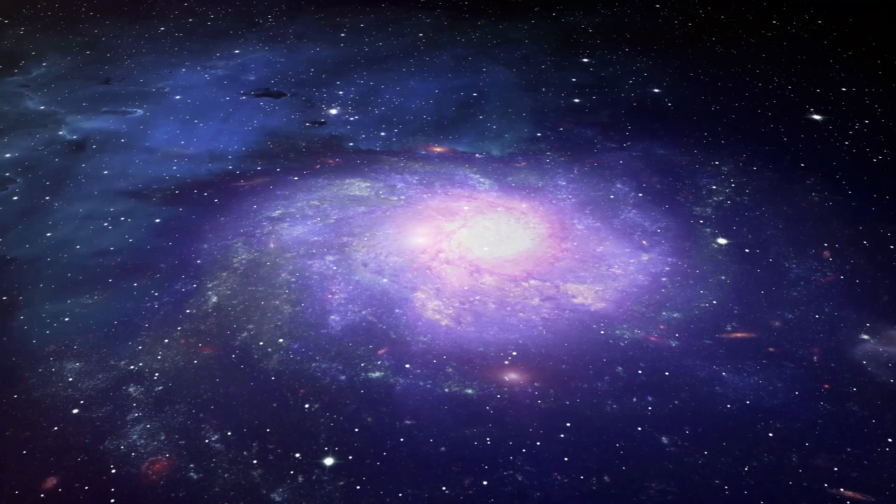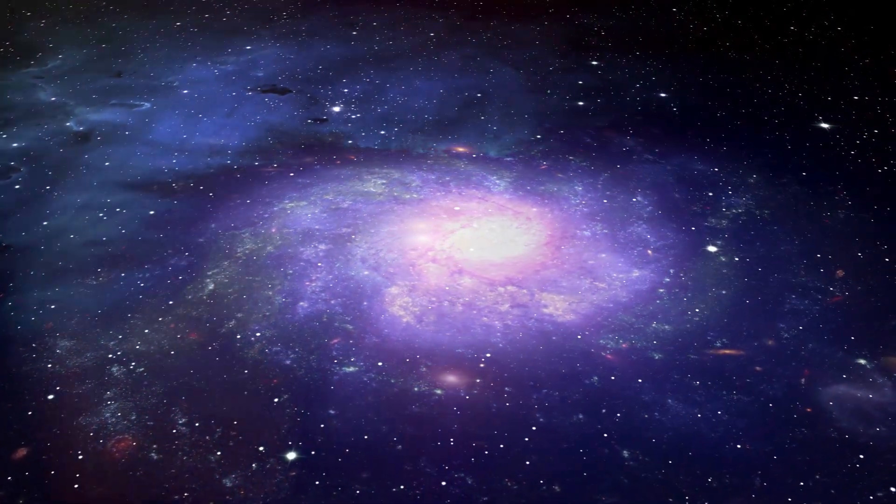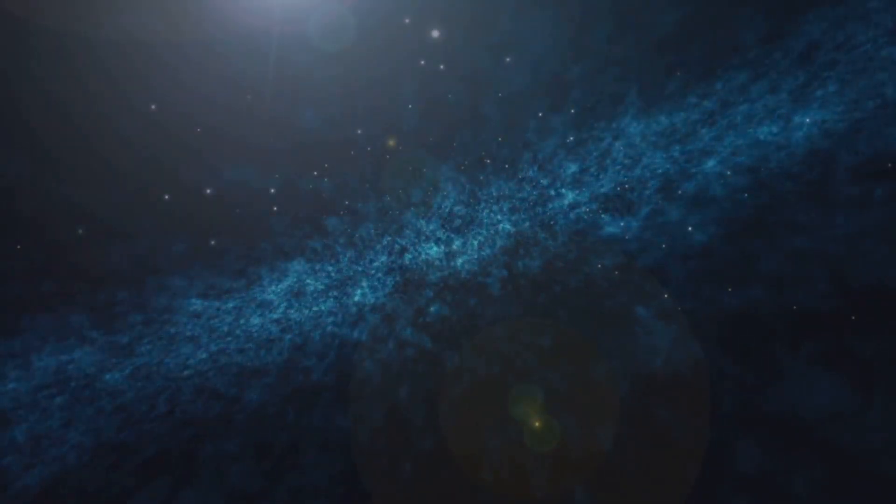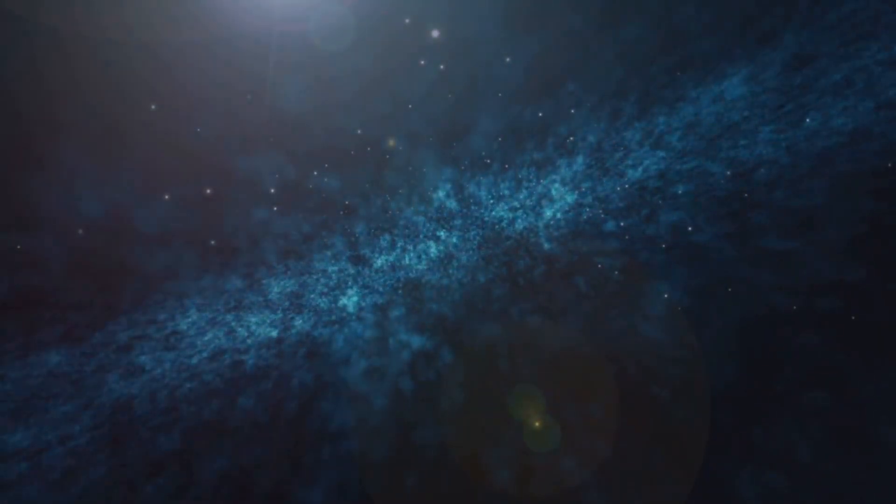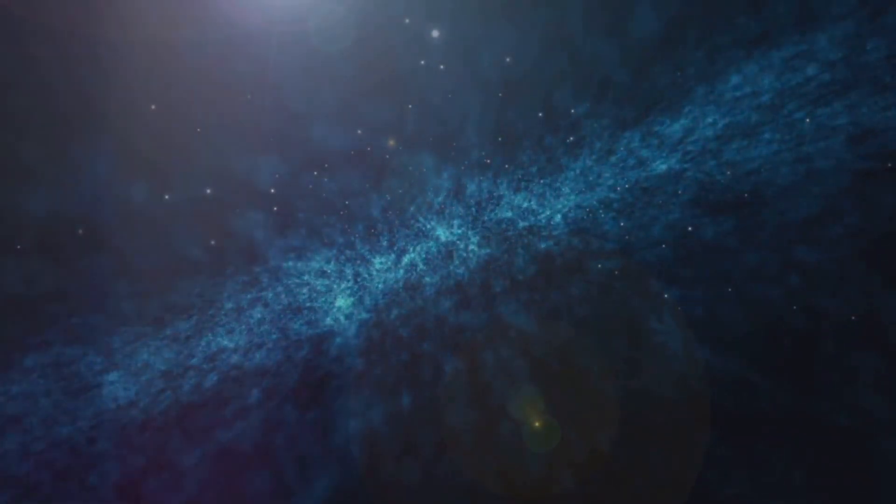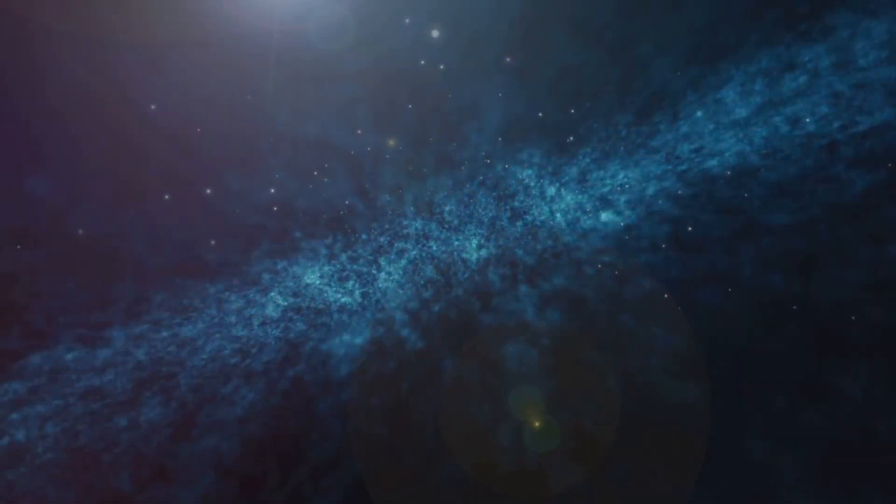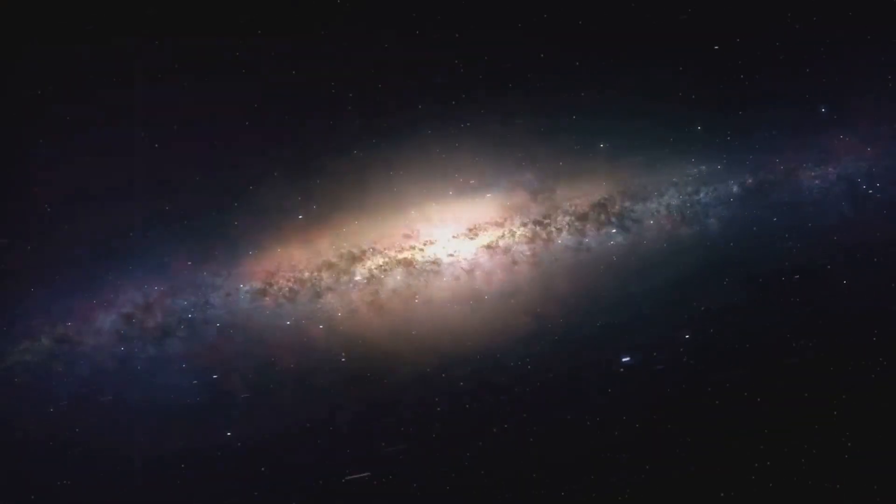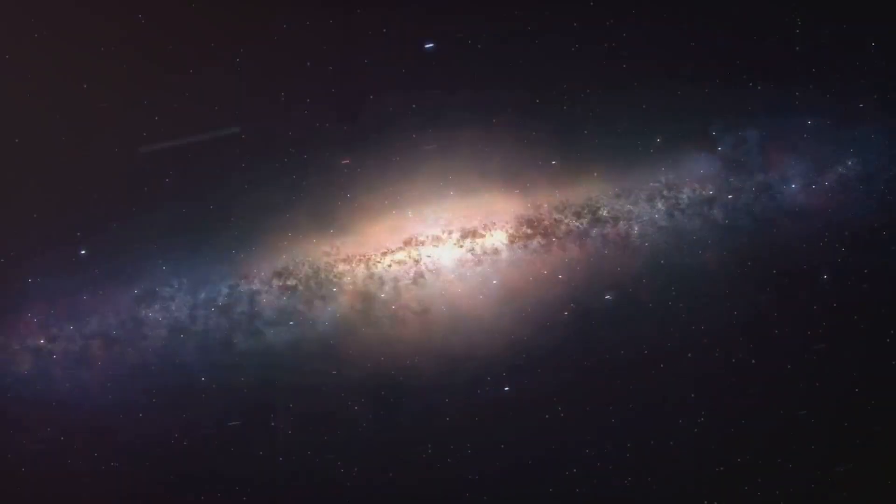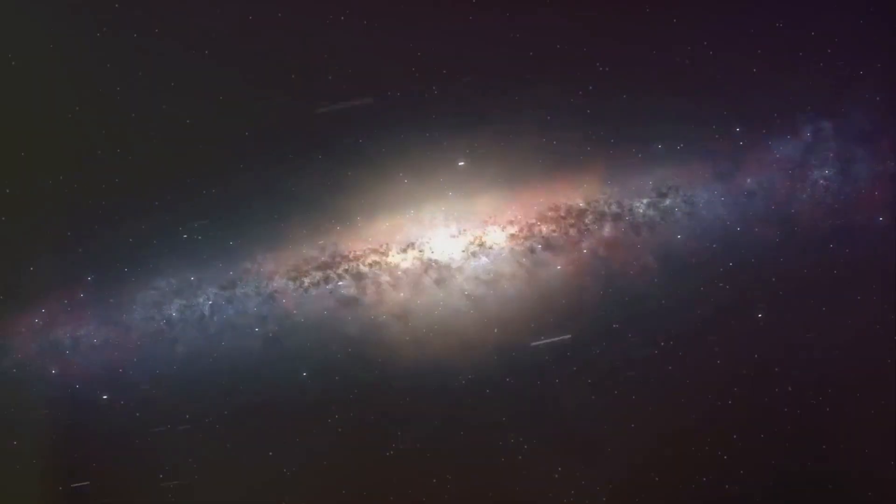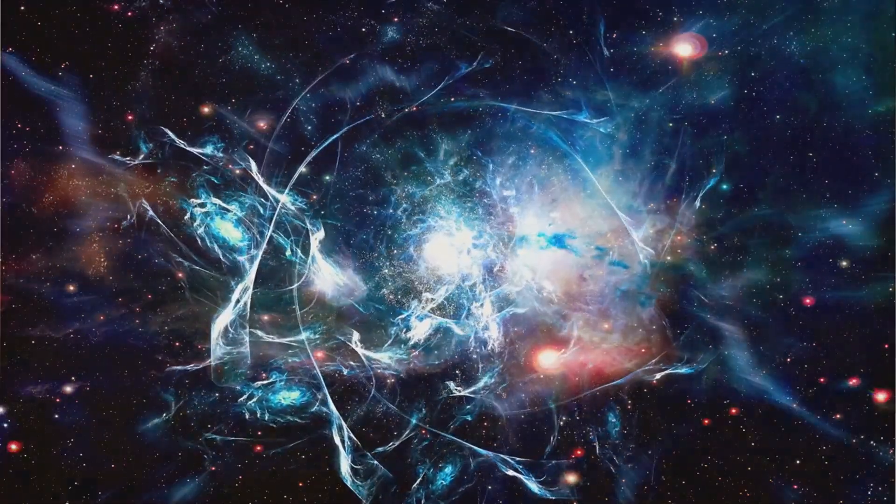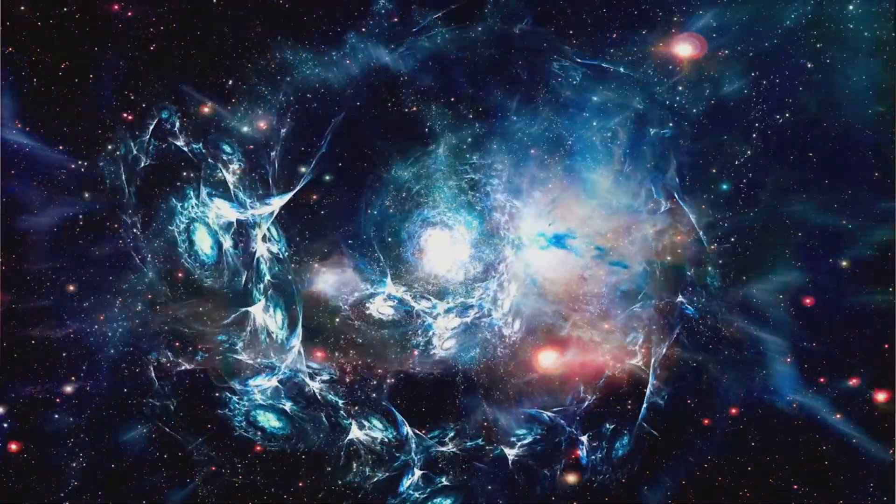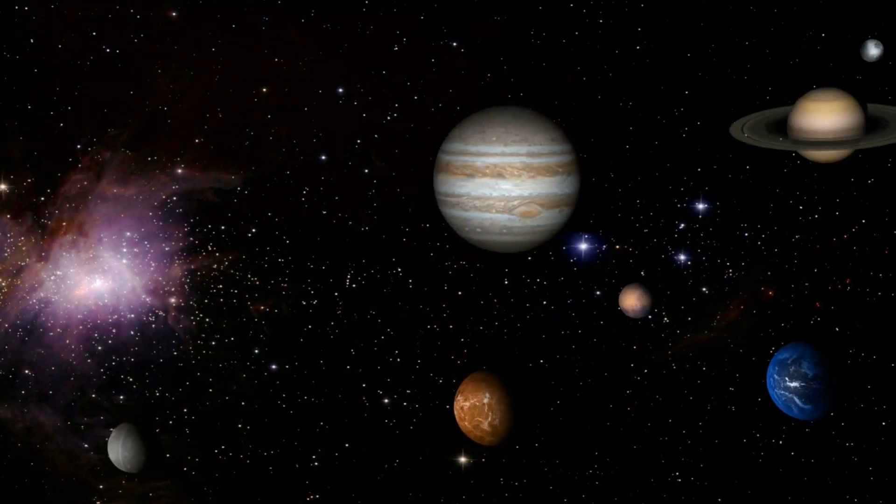Now, what precisely happens when two galaxies, each home to hundreds of billions of stars, begin to gravitate towards each other? Well, the first thing to know is that galaxies are mostly empty space. The stars within them are scattered so far apart that they are unlikely to collide directly. As the gravitational forces between the Andromeda and Milky Way galaxies increase, they start to pull and tug at each other. This cosmic tug-of-war distorts their shapes, warping and stretching them into elongated spirals. Imagine pulling at a piece of taffy, and you'll get the idea.